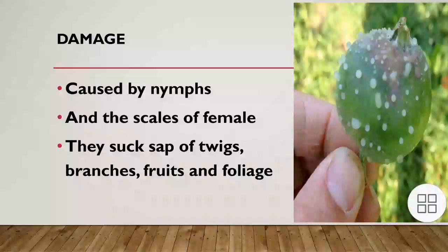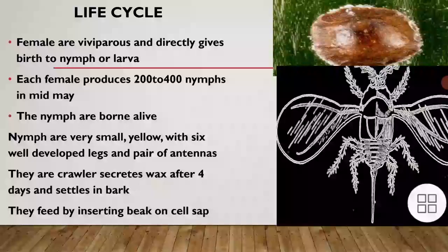Damage is caused by nymphs and female scales which suck the sap of twigs, branches, fruits, and foliage. Infested trees show a general decrease in vigor and fruit is rendered unmarketable. If trees are heavily infested, the bark may become completely covered by overlapping scales. The bark often cracks and the twig dies. The injury is due to loss of cell sap.